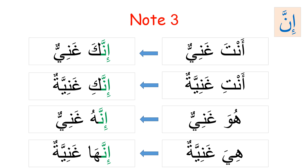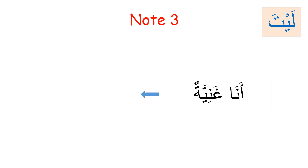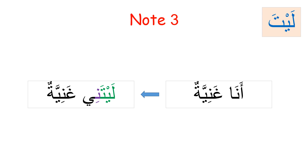Perhaps the most challenging is anna, because we must change the movement mark of the last letter of each preceding particle to a kasra to match the letter ya. With ka'anna: anna ghaniyyatun becomes ka'anni ghaniyyatun. With la'alla it will be la'alli ghaniyyatun. With layta, things are slightly different — just memorize it as laytani. So it is laytani ghaniyyatun, not layti.